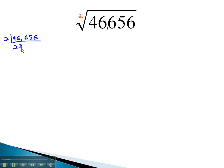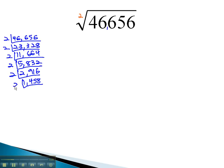It's divisible by 2 six times: 23,328, then 11,664, then 5,832, then 2,916, then 1,458, then 729. Then it's divisible by 3 six times: 243, 81, 27, 9, 3, and finally 1.